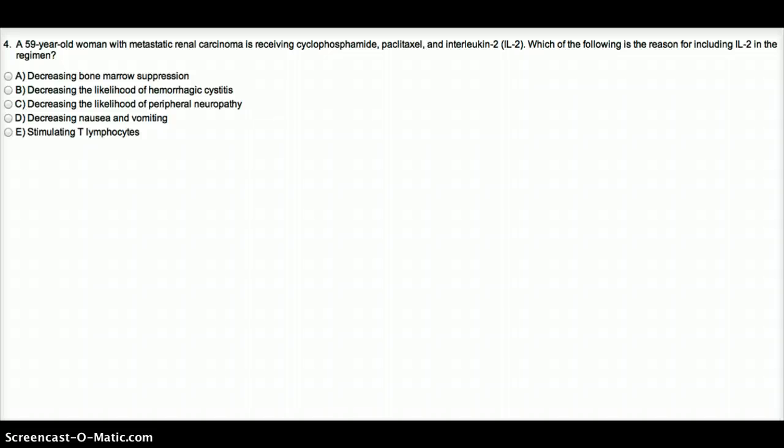Now, the question is saying, which of the following is the reason for including IL-2 in the regimen? Why are we using IL-2? We're using it to treat metastatic renal carcinoma. So we want to attract cytotoxic T lymphocytes, helper T lymphocytes. We want to create as much immune response as possible. That would be the main function of IL-2.